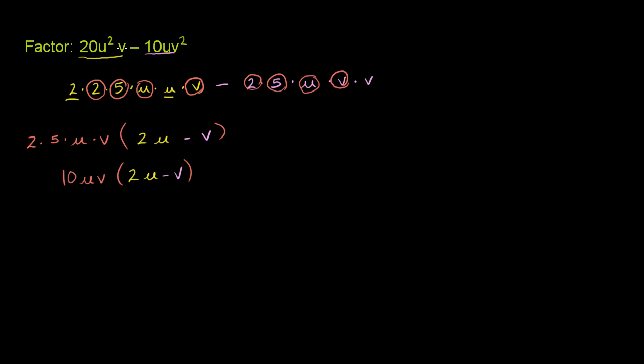And then if I divide this thing by 10uv, I'm going to be left with 2u, and if I divide this by 10uv, I'm going to just be left with a v. So that's another way to think about it.